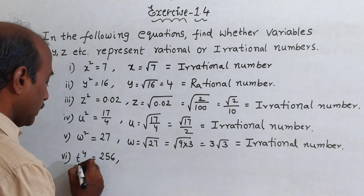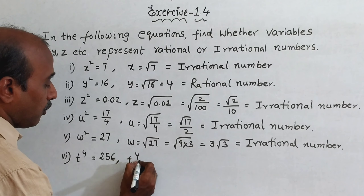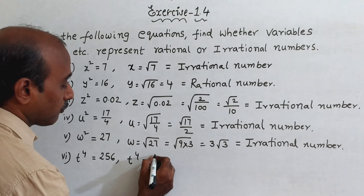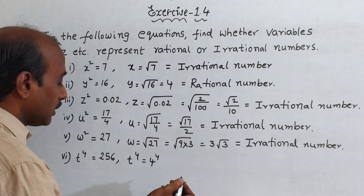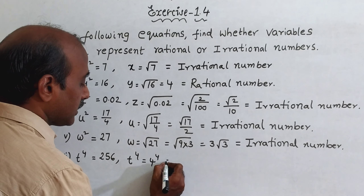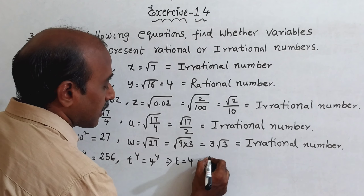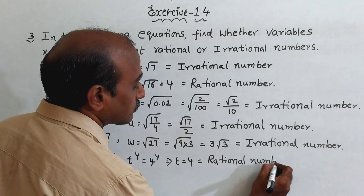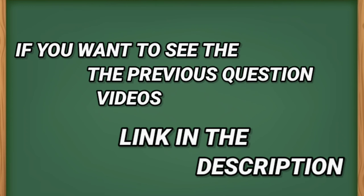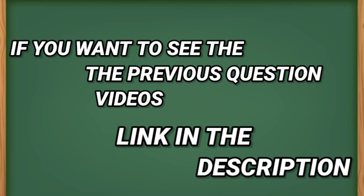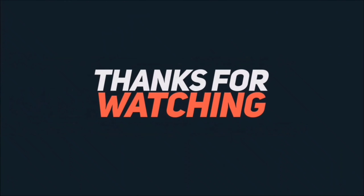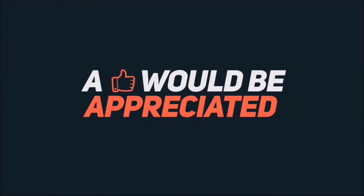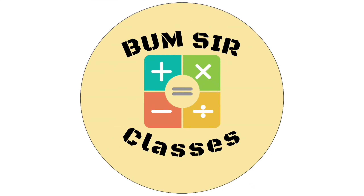Next one: t to the power 4 is equal to 256. You can write 256 as 4 to the power 4, because 4 fours are 16, 16 fours are 64, and 64 fours are 256. Therefore t is equal to 4, which is a rational number.